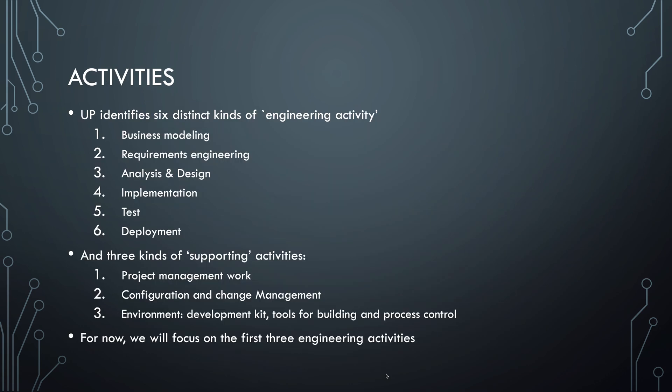Here's a brief overview of six different activities. In this course we're mainly interested in the first three. Next to these main activities, there are a few meta or supporting activities, including project management, change management to make sure changes in the requirements or involved stakeholders are dealt with properly, and managing tools to support the process such as project management software, development environments, and communication tools.